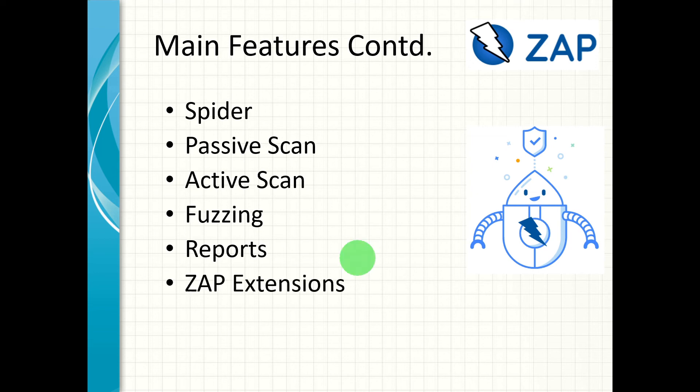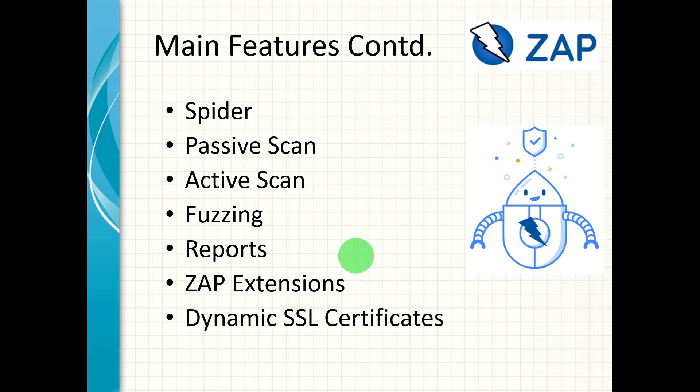A lot of extensions are available on the ZAP marketplace that you can use with ZAP, and you can also extend ZAP yourself as it is open source. ZAP also supports dynamic SSL certificates, so you can generate a unique root certificate allowing ZAP to intercept HTTPS traffic.